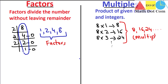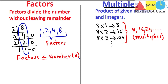Now the difference is clear: factors are less than or equal to the number, and multiples are greater than or equal to the number of which we are finding the multiples. For eight, the factors — one, two, four, eight — are all less than or equal to eight, while the multiples are all greater than or equal to eight.